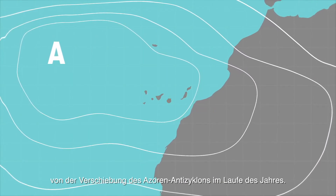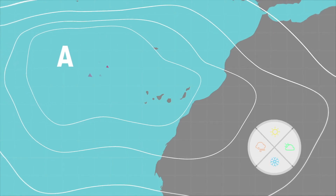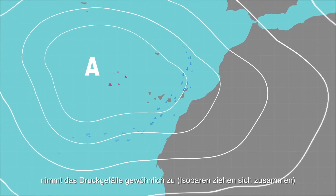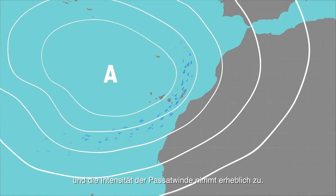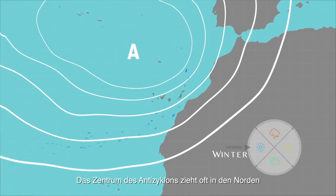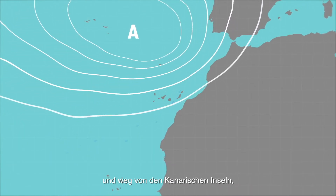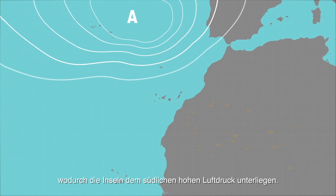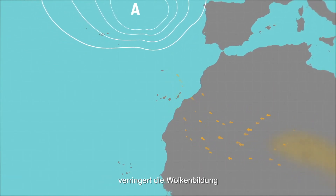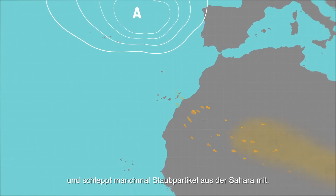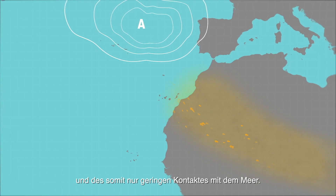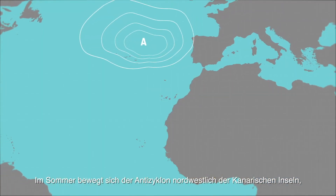The intensity of the trade winds varies in relation to the shift of the Azores anticyclone throughout the year. When the distance between the center of the anticyclone and the Canary Islands is shortened, the pressure gradient usually increases with the isobars being closer together, so the intensity of the trade winds also increases considerably. In winter the situation is more changeable; the center of the anticyclone often moves north and away from the Canary Islands, leaving the islands to the south of the high pressure. In this case, a wind regime with an east-to-southeast component appears, reducing cloudiness and even dragging suspended dust particles from the Sahara, as the air mass is less humid due to African influence.